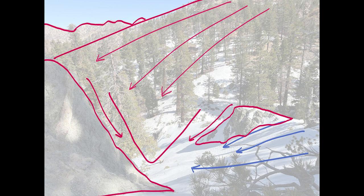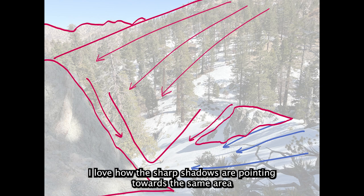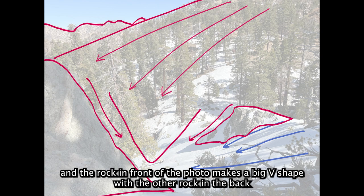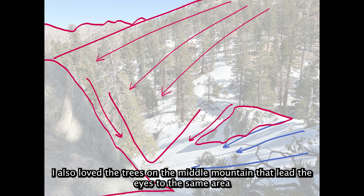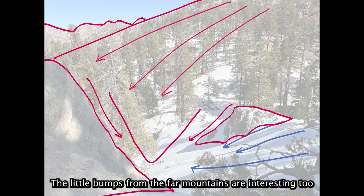What I like about this photo is the shape language. I love how the sharp shadows are pointing towards the same area and the rock in front of the photo makes a big V shape with the other rock in the back. I also love the trees on the middle mountain that lead the eyes to the same area. The little bumps from the far mountains are interesting too.